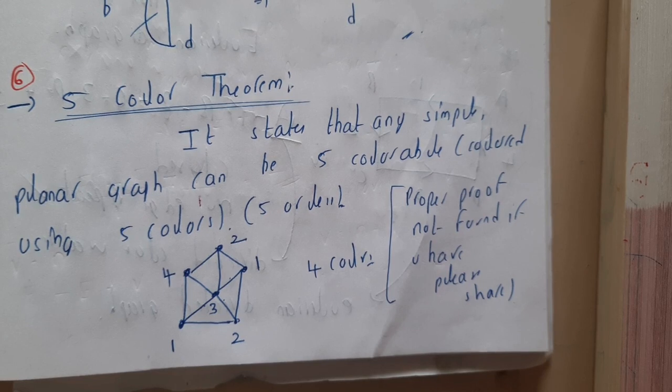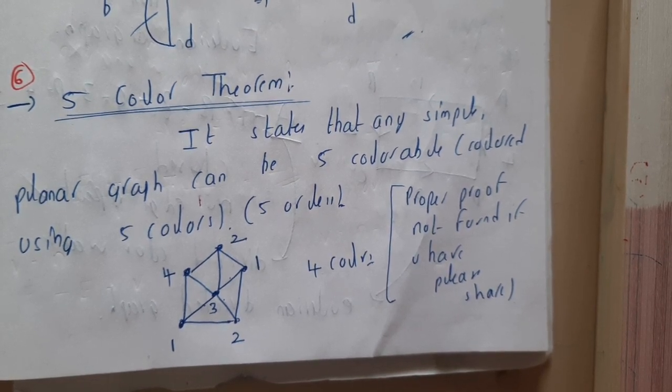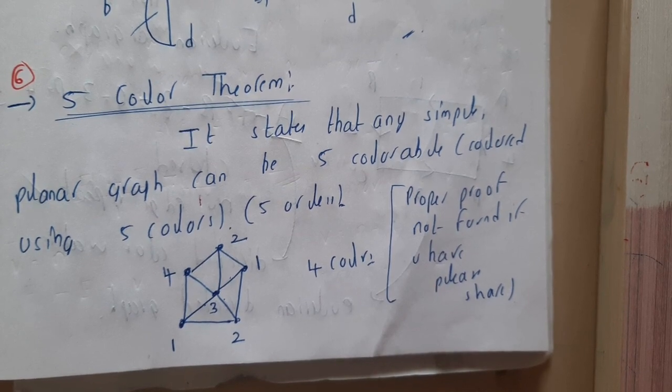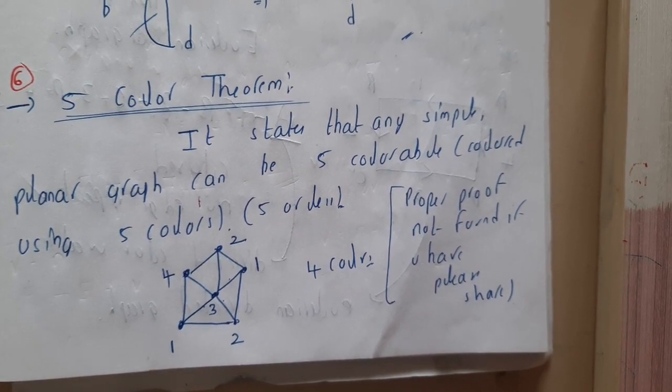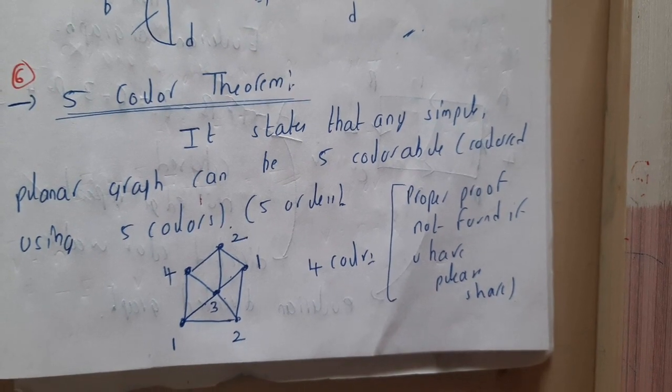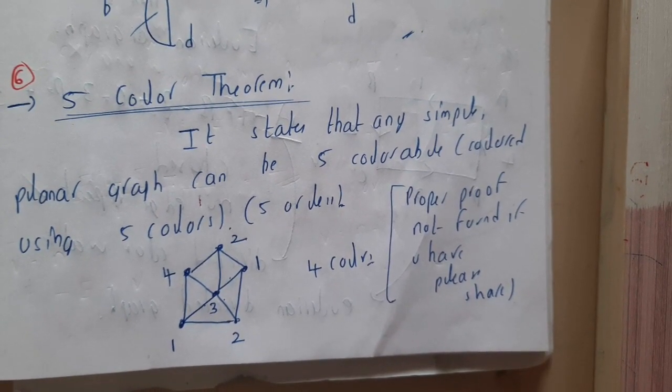When considering only planar graphs, the algorithm or the theorem states that a maximum of five colors is enough to color any kind of graph.